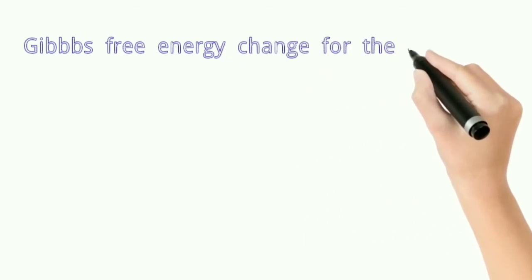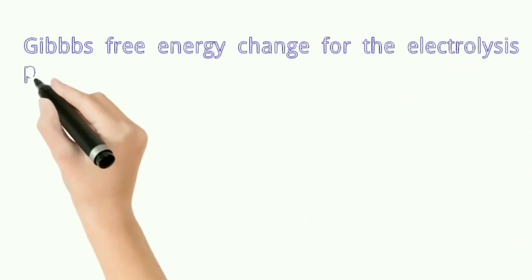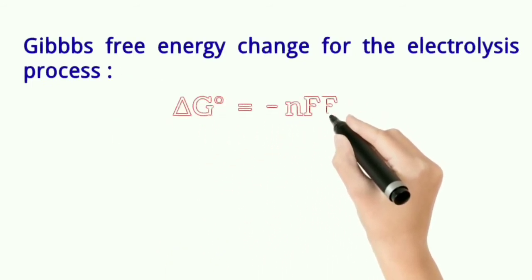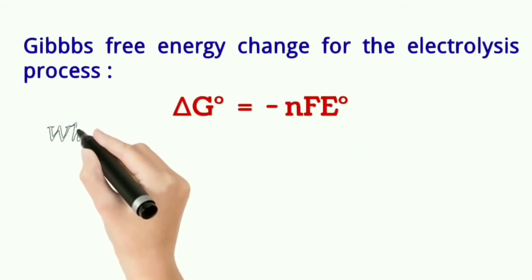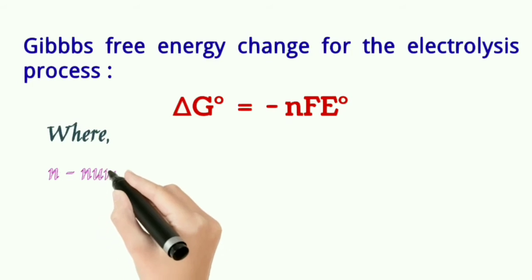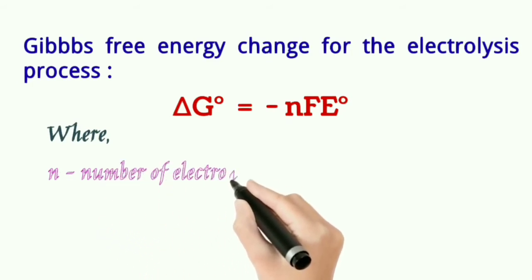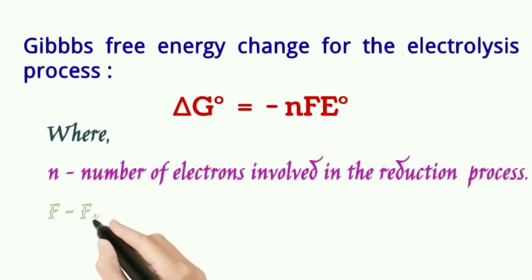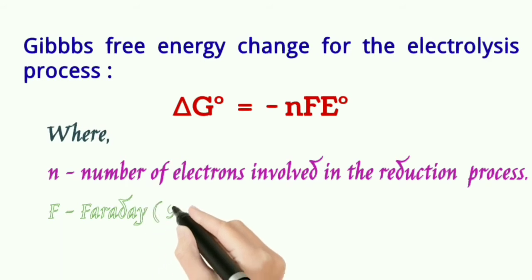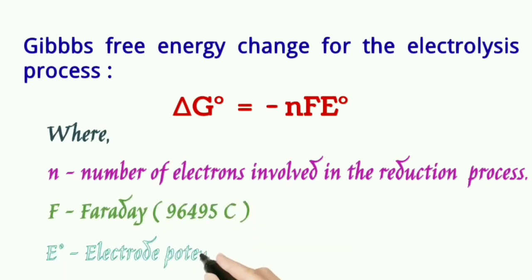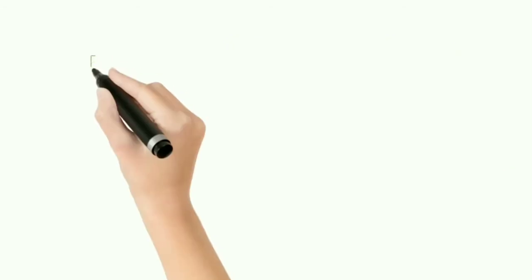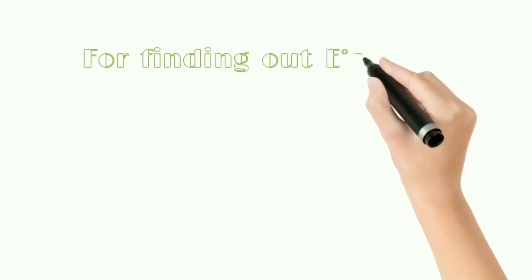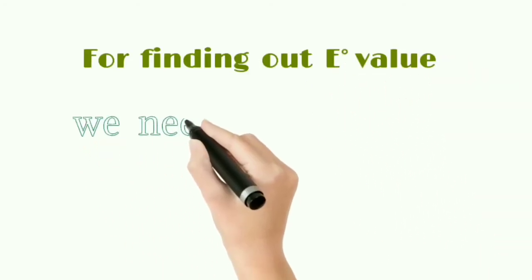Let us see the Gibbs free energy change for the electrolysis process. The formula needed is: ΔG° = −nFE°, where n is the number of electrons involved in the reduction process, F is Faraday's constant (96,495 coulombs), and E° is the electrode potential of the redox couple.